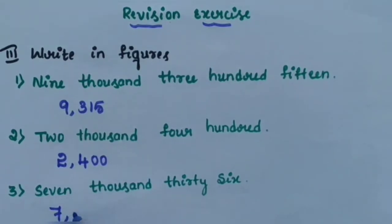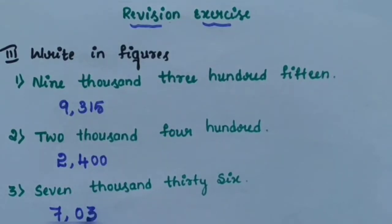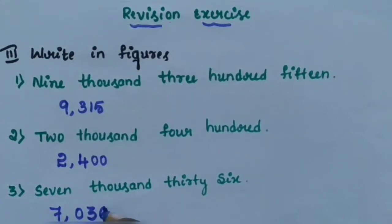7000 — 0 is in the 100s place, 30 is in the 10s place, and 6 is in the units place. So 7036 is the answer.